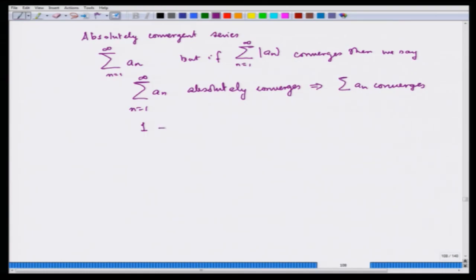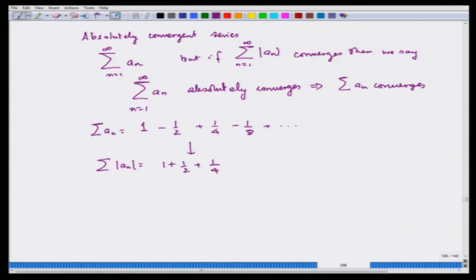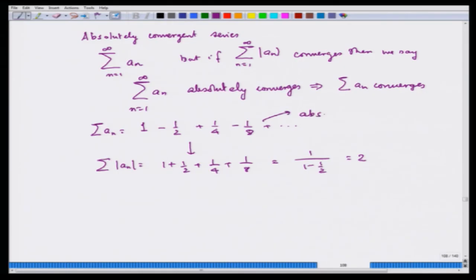Now consider the alternating geometric series 1 + 1/2 − 1/4 + 1/8 − ⋯ When you write Σ|aₙ| you get 1 + 1/2 + 1/4 + 1/8 + ⋯, which is a geometric series with ratio 1/2 and sum 1/(1 − 1/2) = 2. Since Σ|aₙ| converges, Σaₙ also converges, making this an example of an alternating series that is absolutely convergent.